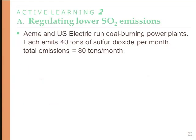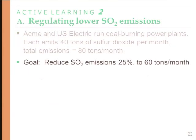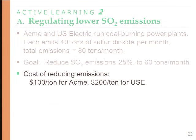Acme is a much more efficient abater — abating a ton of sulfur dioxide costs them only $100 — while Use is far less efficient at $200 per ton. Under command and control, every firm must cut its emissions by 25 percent, so each must reduce by 10 tons. Your task is to compute the cost to each firm and the total cost of this command and control policy — visit with your neighbors and give it some thought.